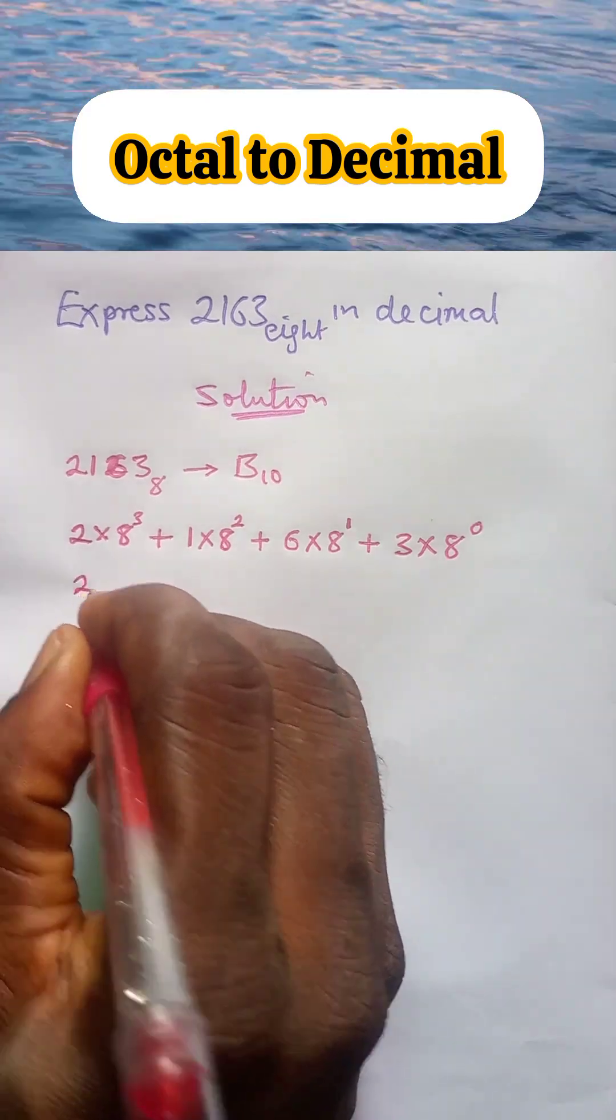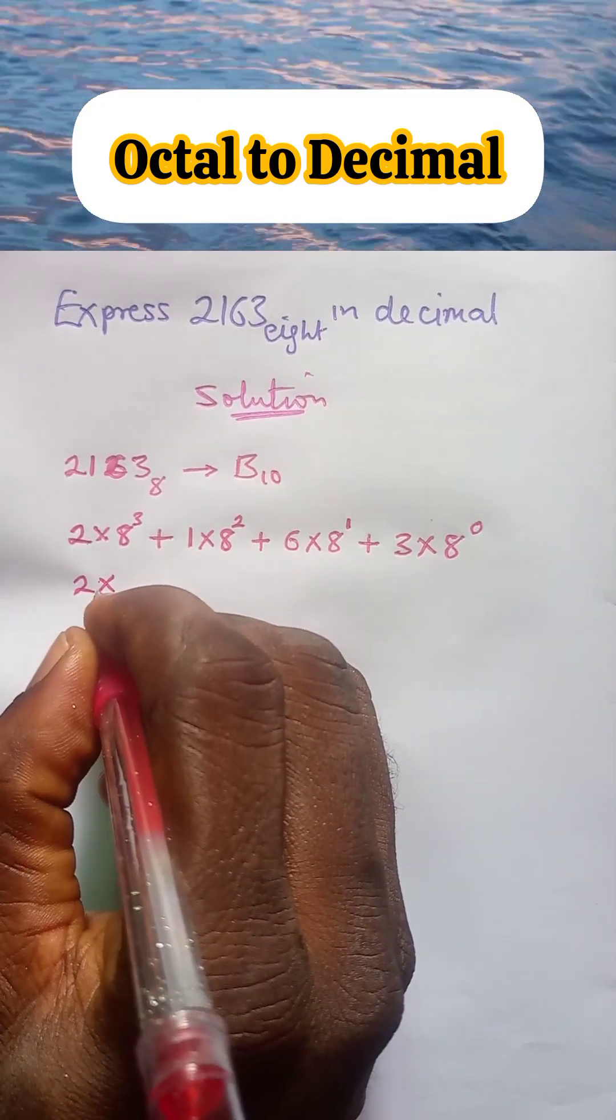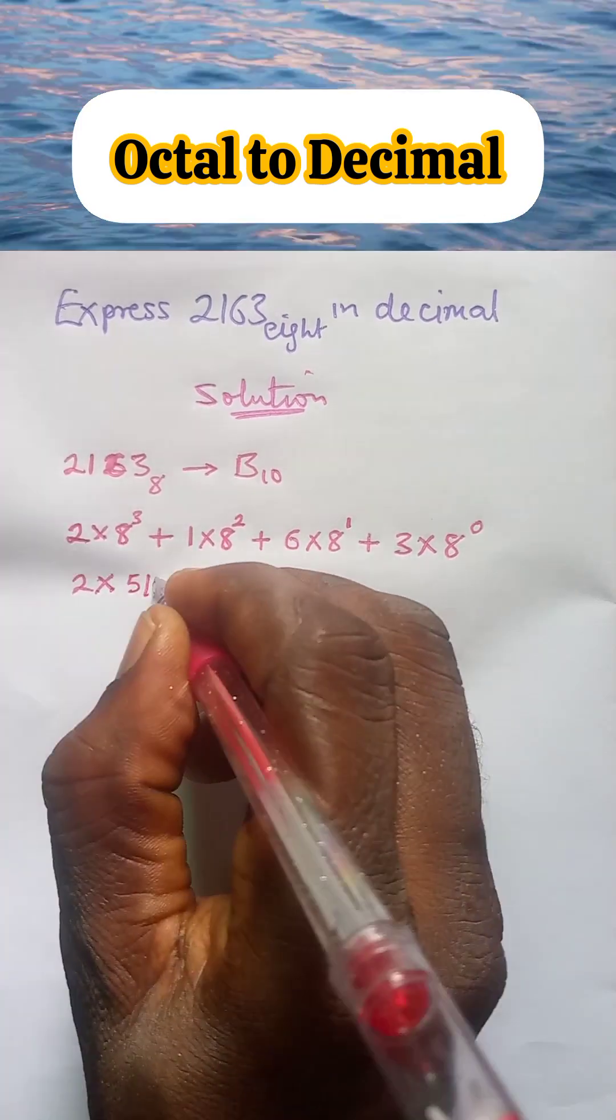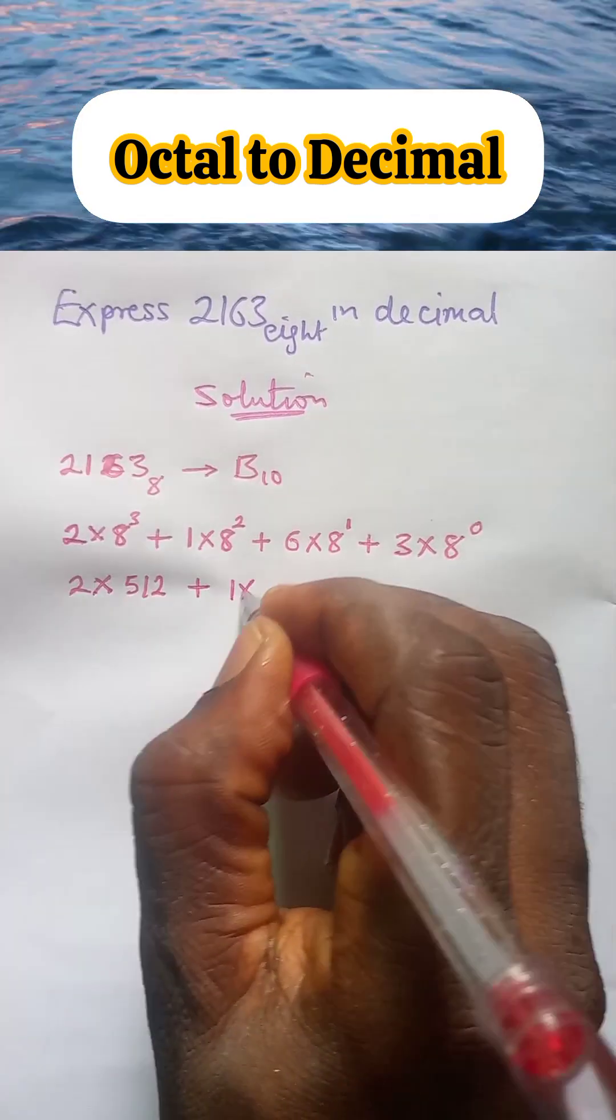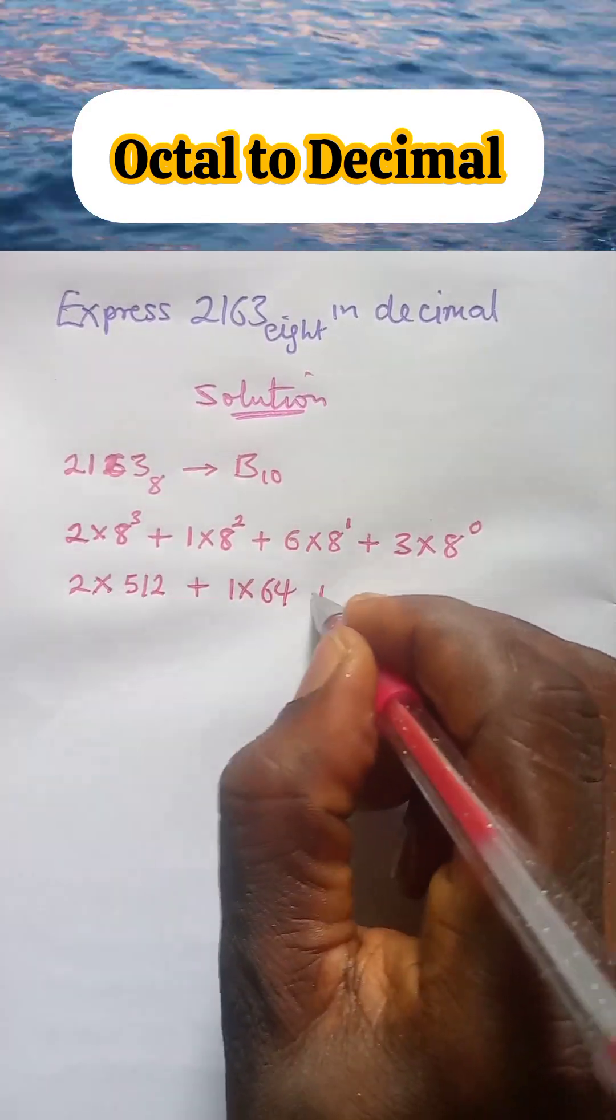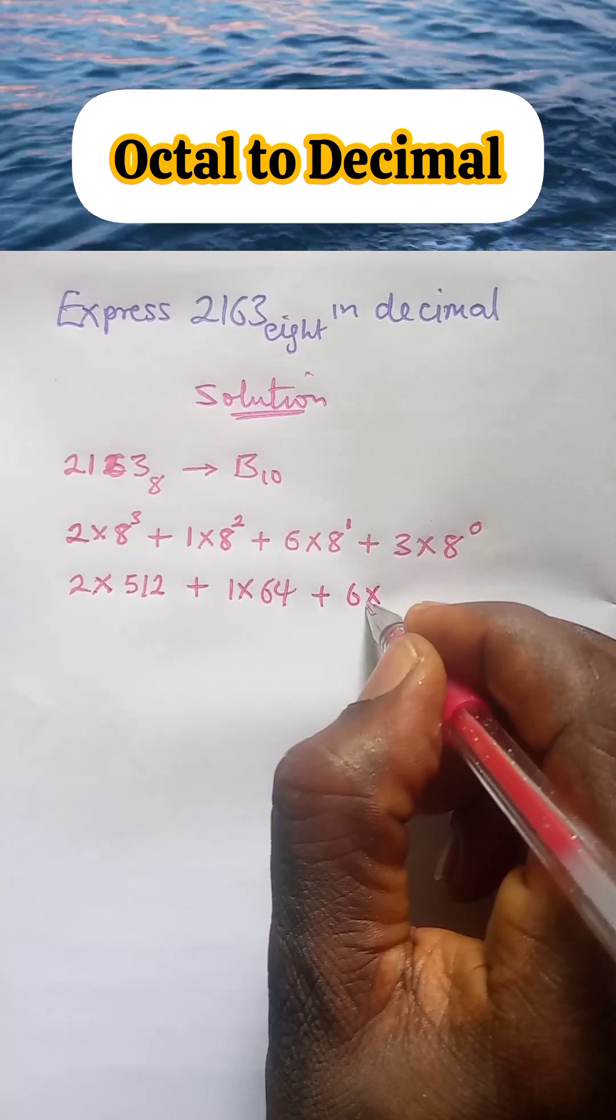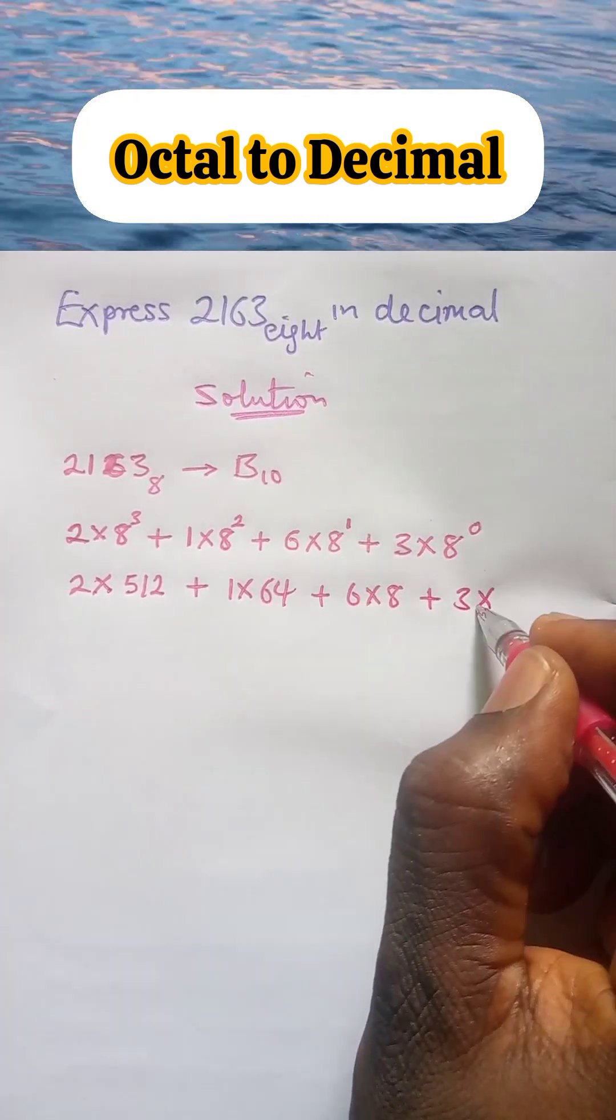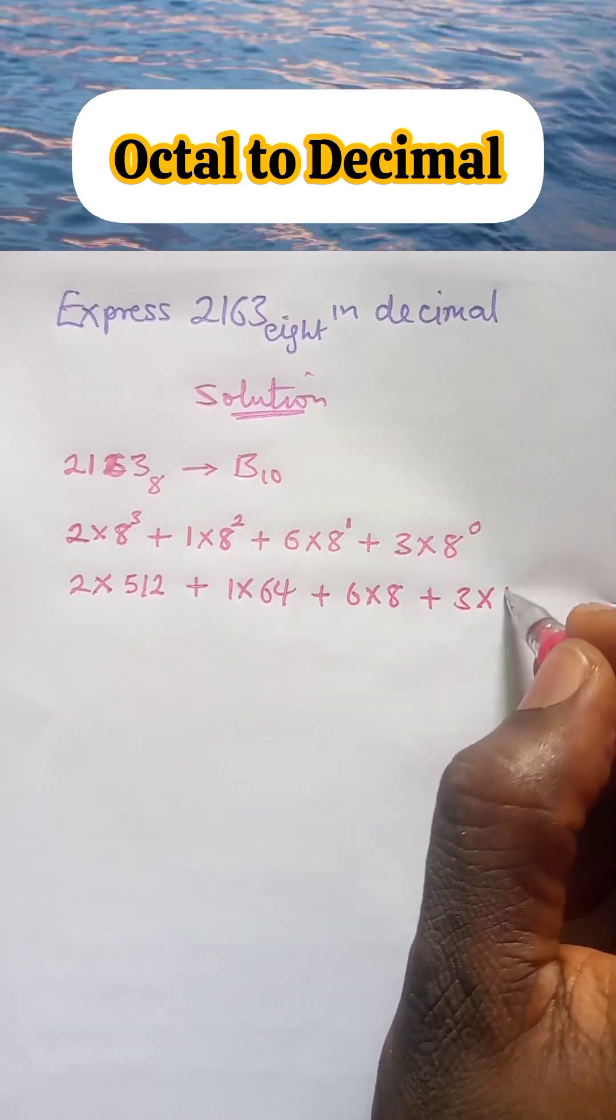Now, 2 multiply 8 raised to power 3 is 512, plus 1 multiply 8 raised to power 2 is 64, plus 6 multiply 8 raised to power 1, which is 8, plus 3 multiply 8 raised to power 0 is 1.